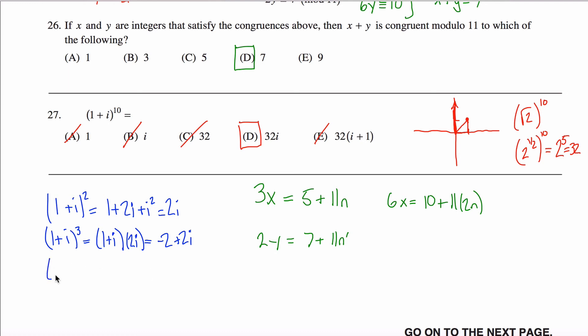And you can continue like this, looking for a pattern, and you'll see it after a little while. 1 plus i to the fourth power is, I don't know, 1 plus i squared times 1 plus i squared, so it's 2i times 2i, which is 4i squared, aka negative 4.